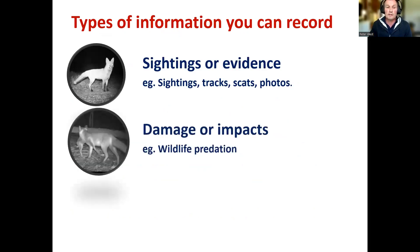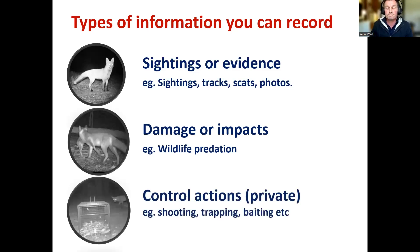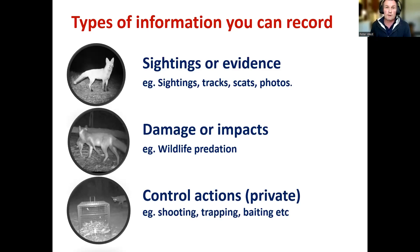Information you can record includes sightings or evidence of foxes, the damage or impacts they're causing — wildlife predation is one of the key things people record — and control activities. You can elect at any stage to record information and make it shareable with the public, or keep it private. With respect to control actions, any information that anybody records is managed privately, discreetly, and securely, so if you're using any of the control methods available for foxes, we will manage your data super securely.